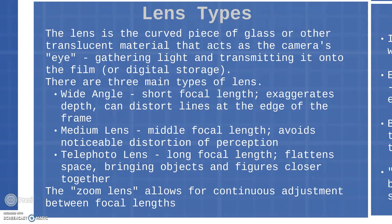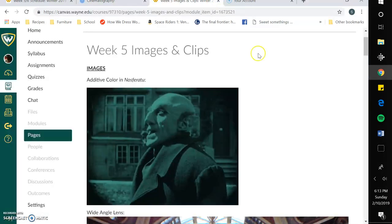A wide angle lens exaggerates depth and distorts the lines at the edge of the frame. A medium lens avoids any noticeable distortion of perception — this is your standard lens used for most things. A telephoto lens flattens space and brings objects and figures closer together; you'd use it to shoot something like a football game, showing the entire field as one big flat space. An extreme wide angle lens is called a fisheye lens and is meant to exaggerate depth and make things look wonky or strange. A zoom lens allows you to adjust between different focal lengths — from wide angle to medium to telephoto.